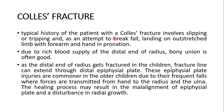The typical history of a patient with Colles' fracture involves slipping or tripping, and as an attempt to break the fall, landing on an outstretched limb with the forearm and hand in pronation. Due to the rich blood supply of the distal end of the radius, bony union is often good. In children, the fracture line can extend through the distal epiphyseal plate, and healing may result in malalignment of the epiphyseal plate and disturbance in radial growth.